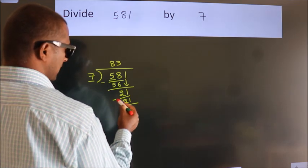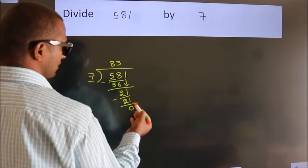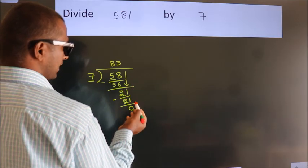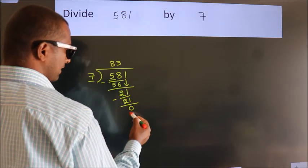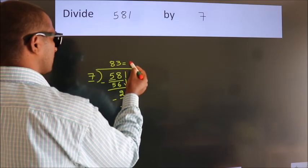Now we subtract. We get 0. After this, no more numbers to bring it down. And we got remainder 0. So this is our quotient.